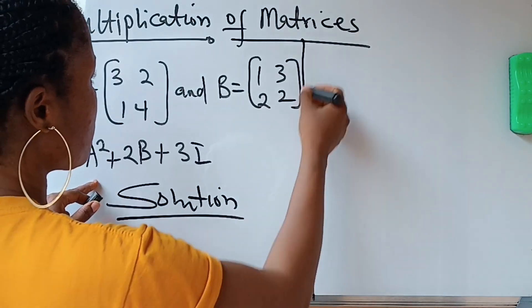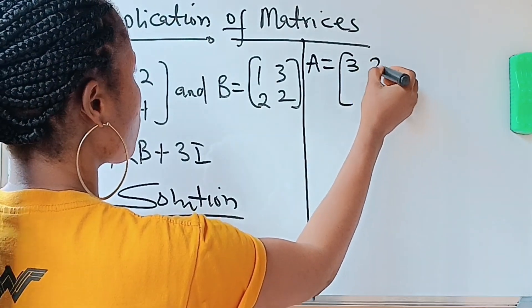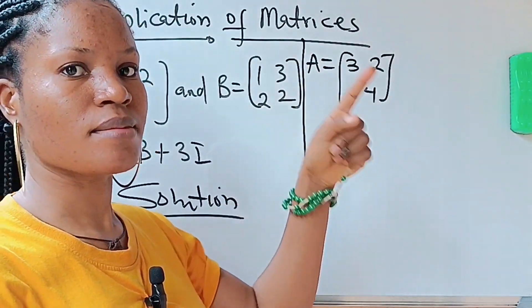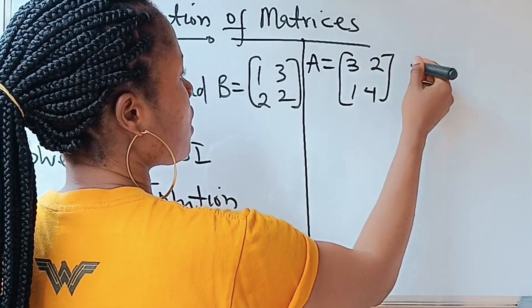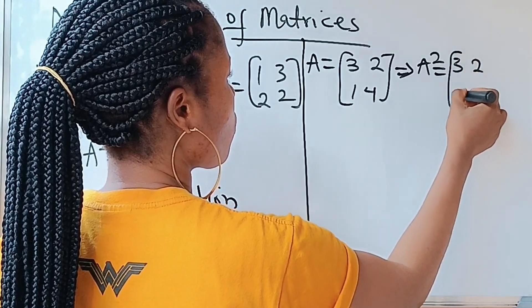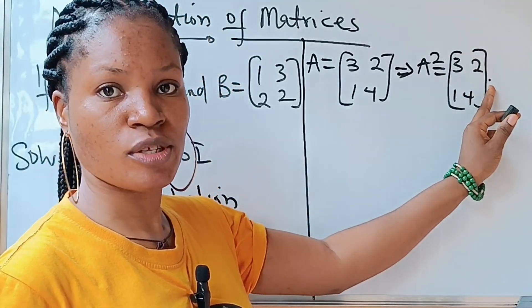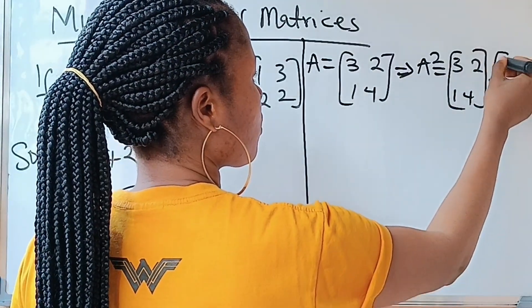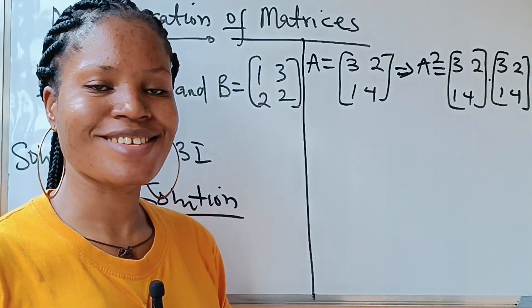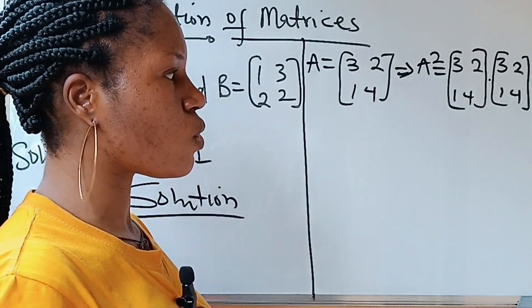First of all, what is A squared? Our matrix A is [3, 2, 1, 4]. A squared means A times A, so A squared is [3, 2, 1, 4] multiplied by [3, 2, 1, 4]. The dot here is the multiplication sign. Now the main question is: how do we multiply two matrices together?